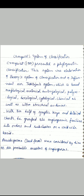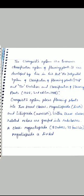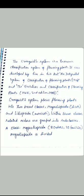With the help of synoptic keys and detailed charts, he grouped the angiospermic families into orders and subclasses on a worldwide basis. Pteridosperms, i.e., seed ferns, were considered by him as probable ancestors of angiosperms. The Cronquist system is a taxonomic classification of flowering plants, developed in his texts: 'An Integrated System of Classification of Flowering Plants' (1981) and 'The Evolution and Classification of Flowering Plants' (1968, 2nd edition 1988).